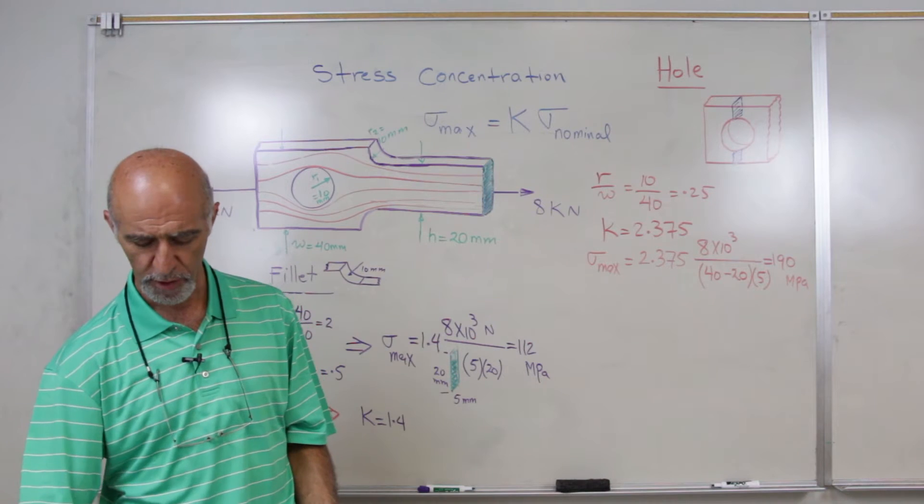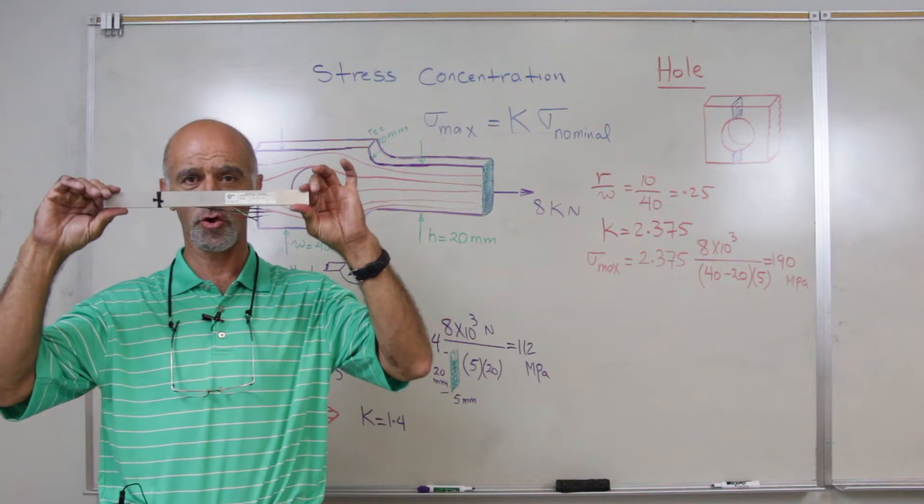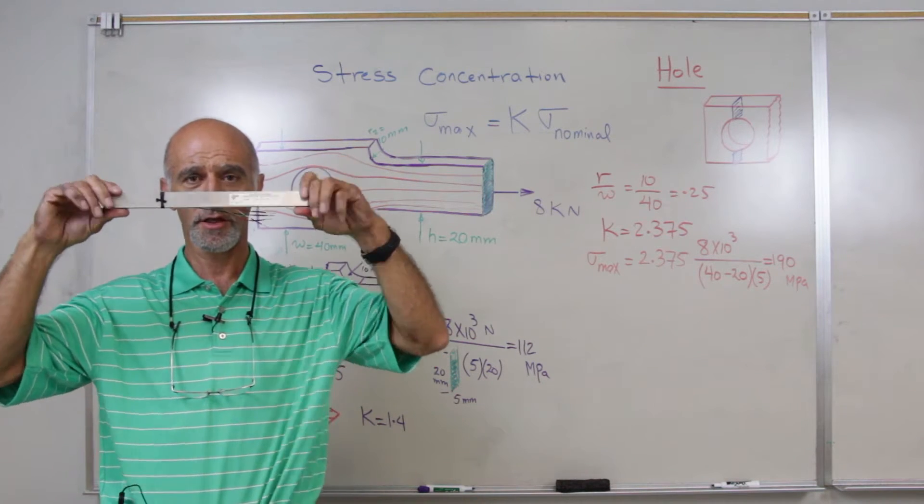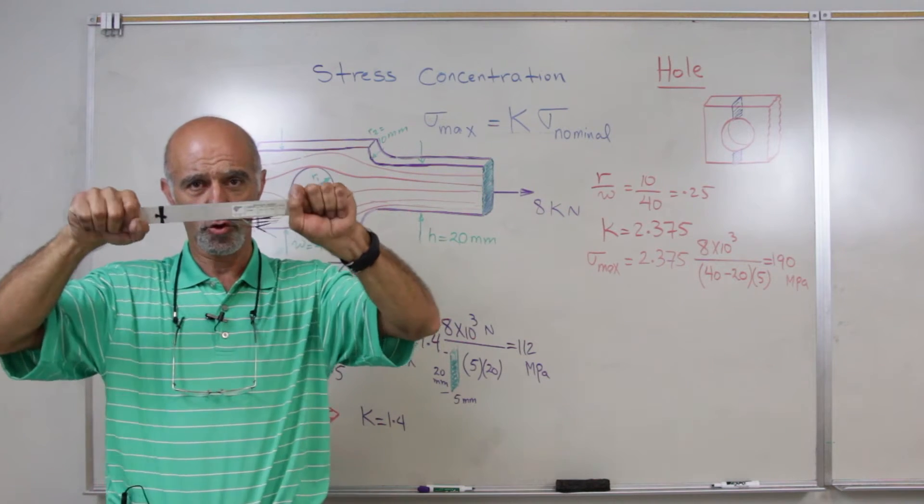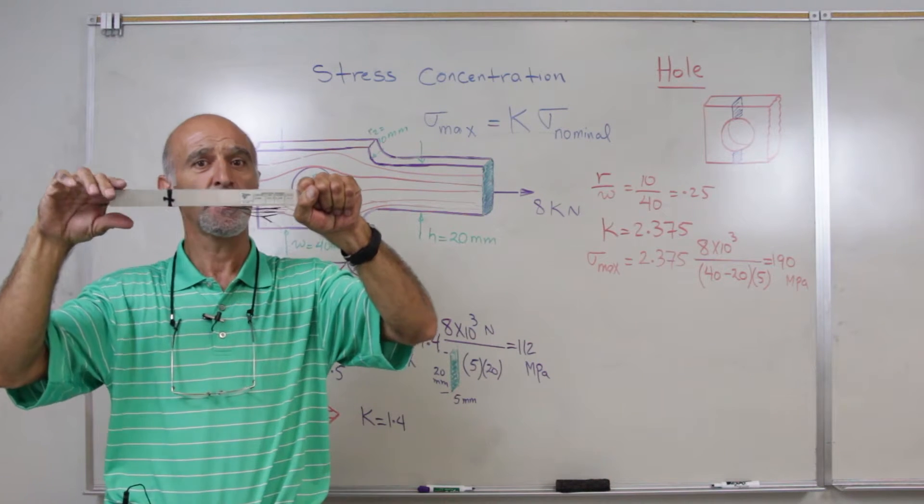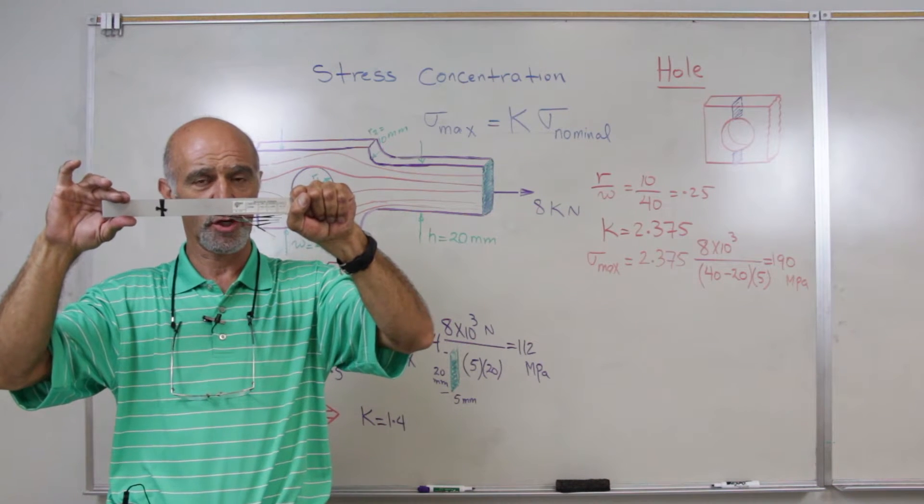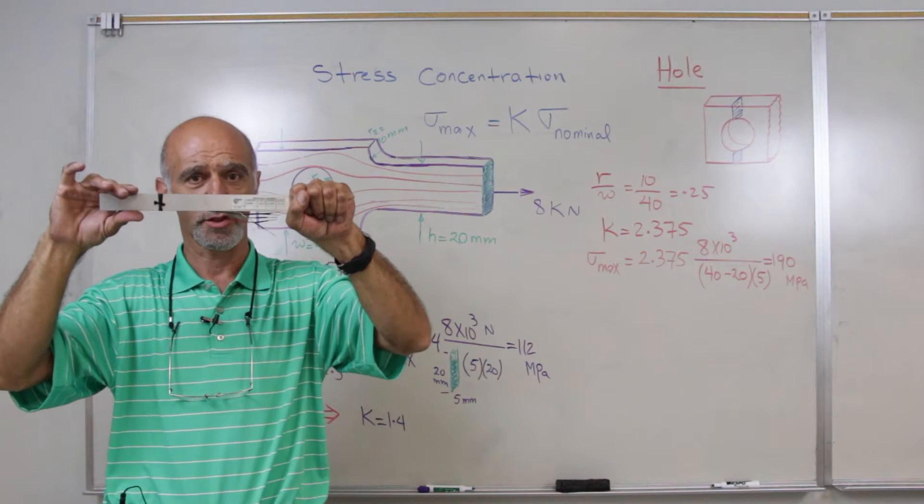For example, this bar does not have any geometric changes throughout its length. So when I pull or push or bend or torque it, it will not have stresses concentrated throughout its body.